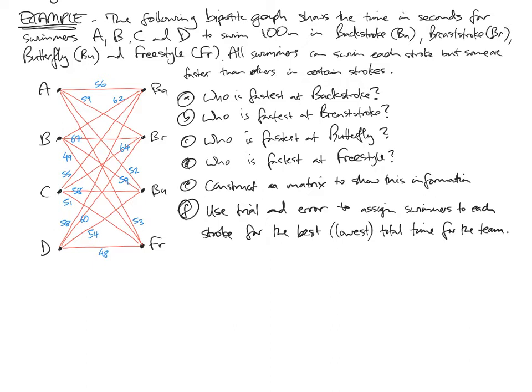Question A: who's the fastest at backstroke? This is the backstroke node, and we need to look at these weighted lines to see who has the lowest number. So A swims backstroke in 56, B swims it in 62, C swims it in 55, D swims it in 58. So the lowest number was 55, which was swimmer C. C at 55 seconds.